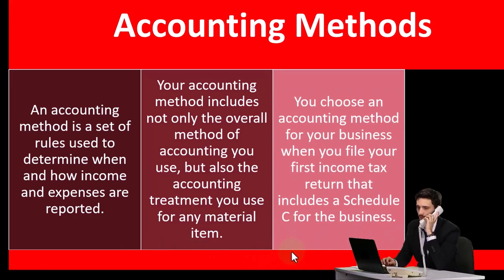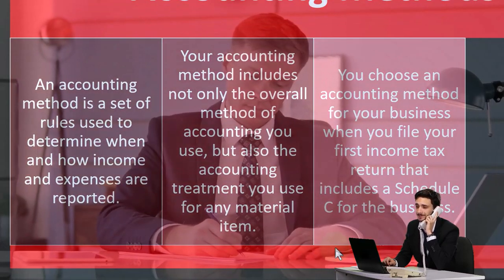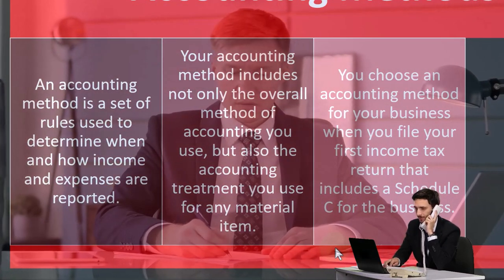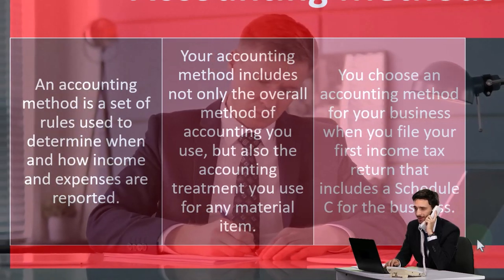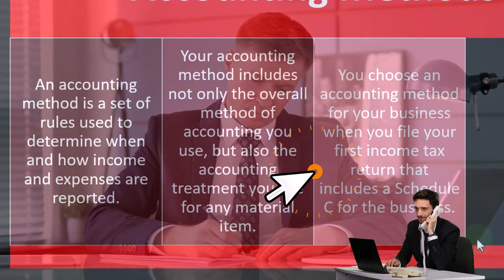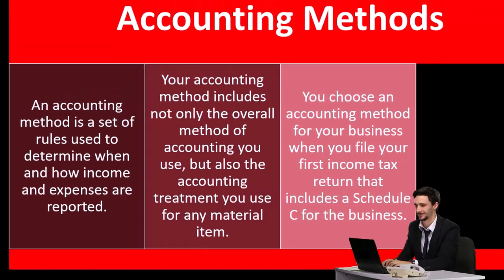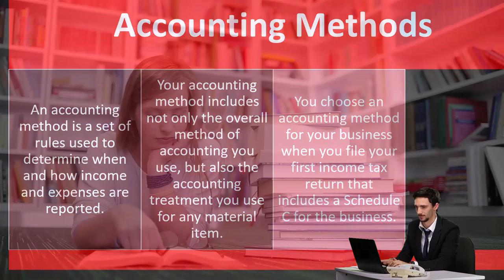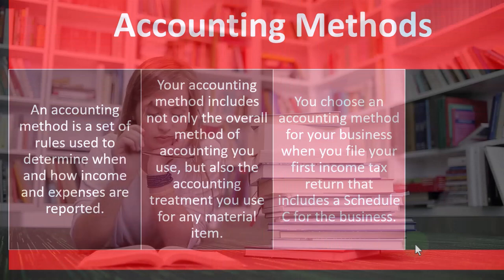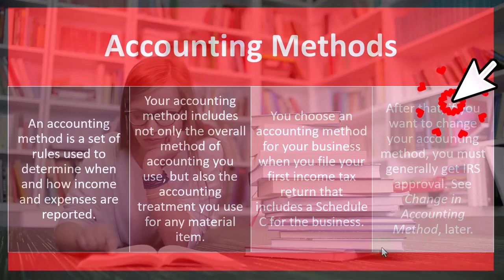You choose an accounting method for your business when you file your first income tax return that includes a Schedule C. When you first start out, you want to make sure that you get your accounting method correct, because the IRS gives you some leeway to choose an accounting method. But once chosen, they're going to want you to stick to that accounting method. You may be able to change, but it might be a little burdensome to make the change — you might have to request an accounting method change.